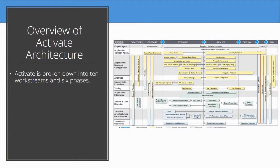Now we will take an overview of the Activate architecture. Activate is broken down into 10 work streams and 6 phases. We can see the various tasks that are necessary for a typical implementation in the diagram here. We can see the various work streams down the rows and across the top, the various phases going from left to right in terms of time as the project continues. We will explore these in the following slides.